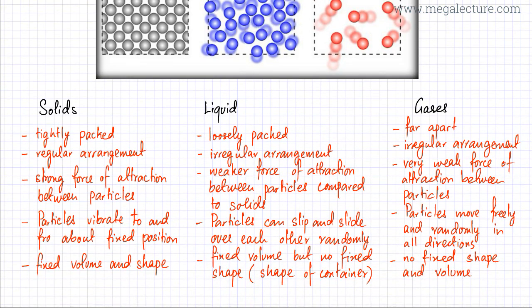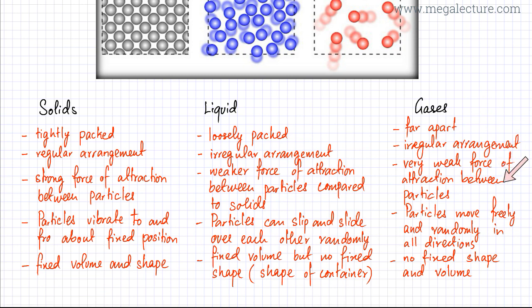The properties of particles in gaseous state: first, they are far apart — very far apart in reality, whereas in liquid and solids the particles were very, very close together. The arrangement is irregular and random. There is a very weak force of attraction between particles, or the force of attraction can be easily overcome because the particles are very, very energetic. And the particles can move freely and randomly in all directions.